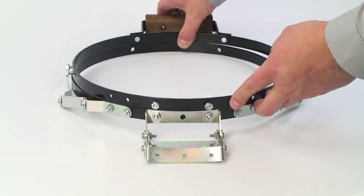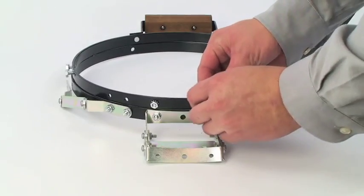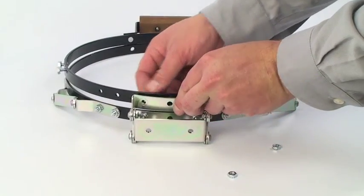Now place the upper band directly on top of the lower band and remove the nuts from the studs in holes five and six. Now lift the rear hinge into place and replace the nuts and hand tighten.